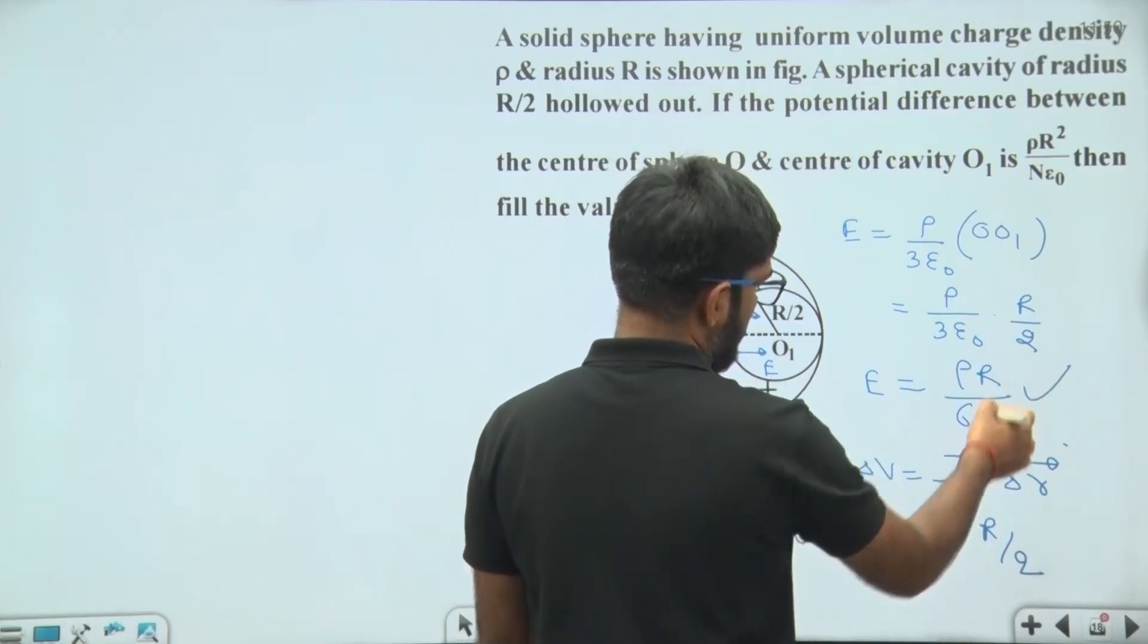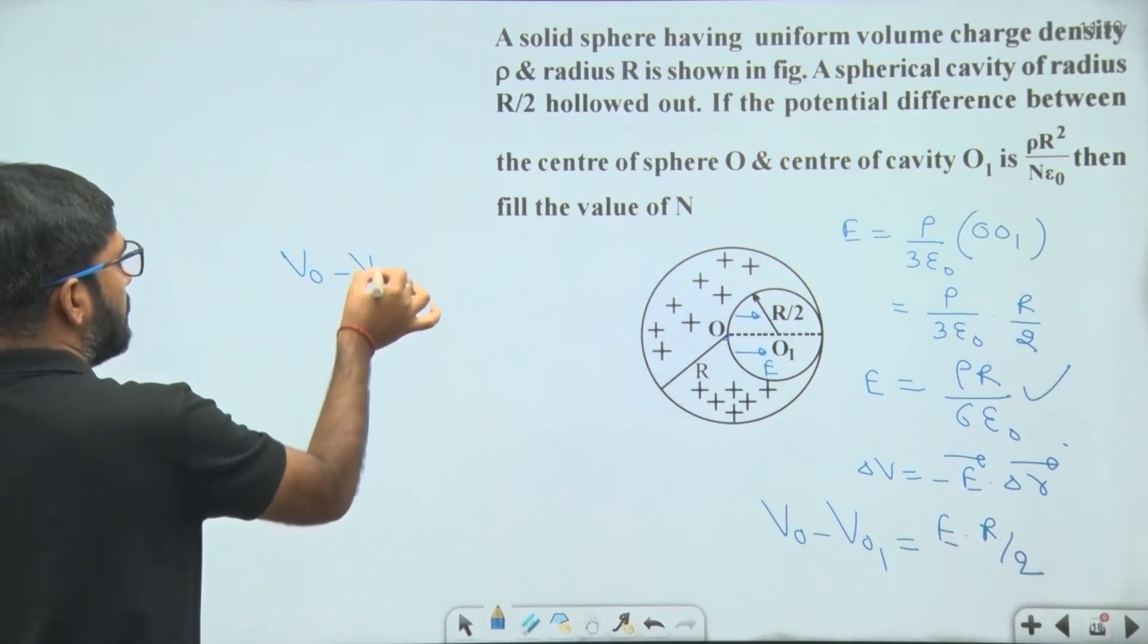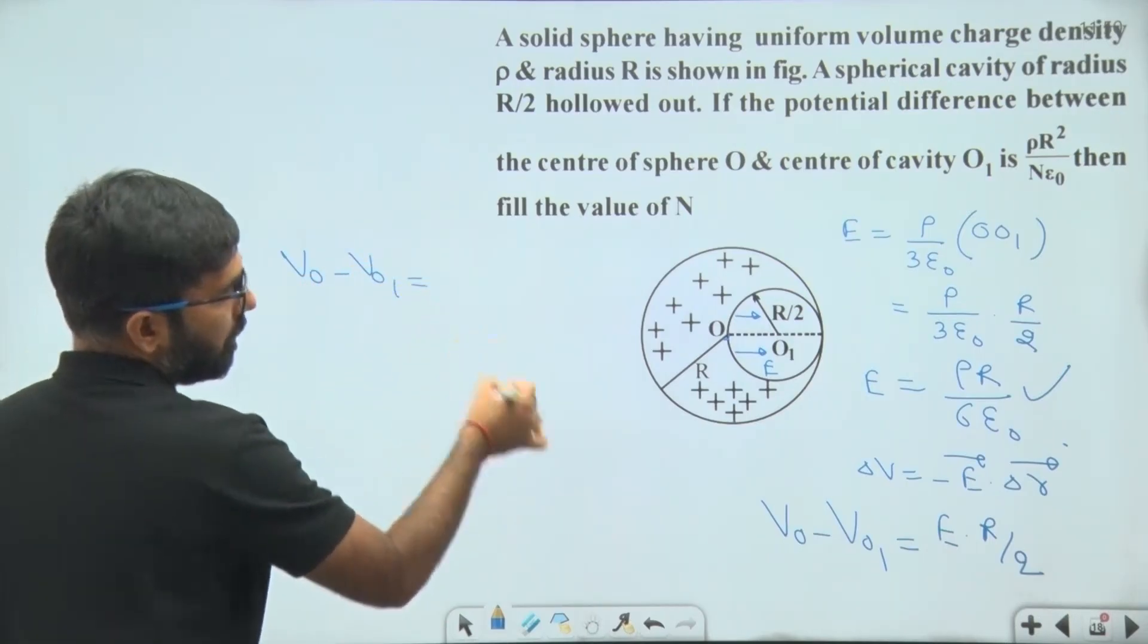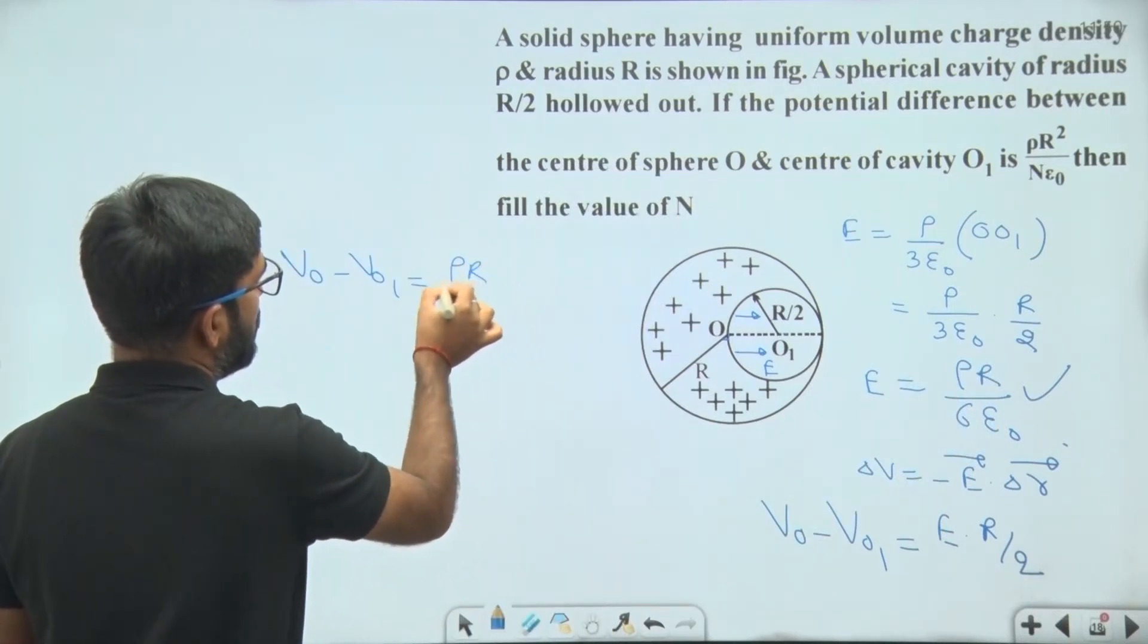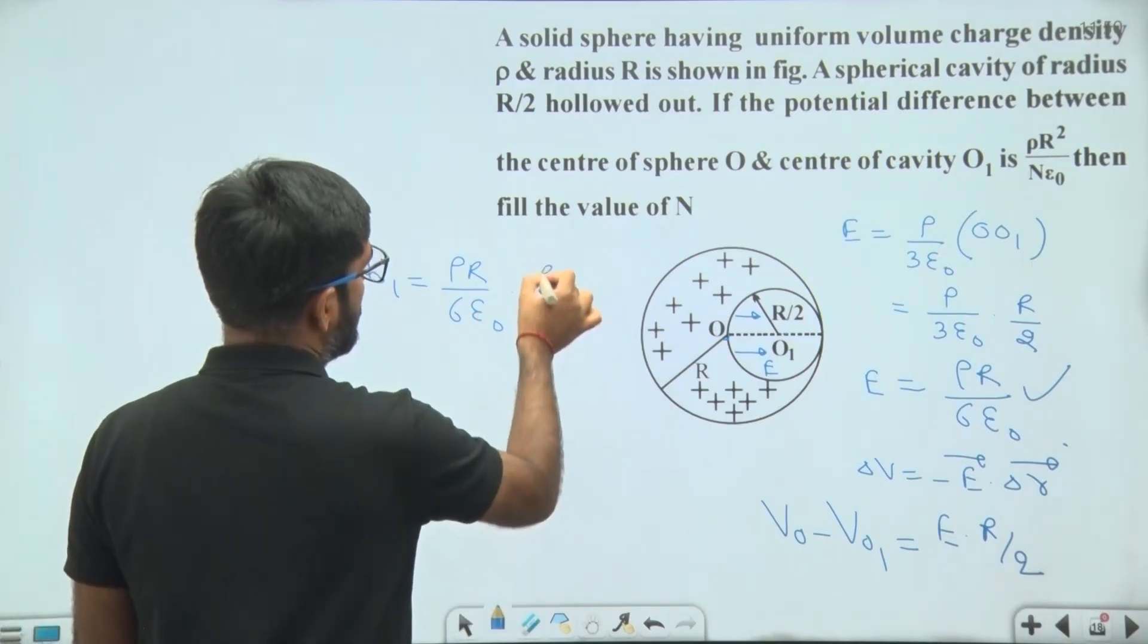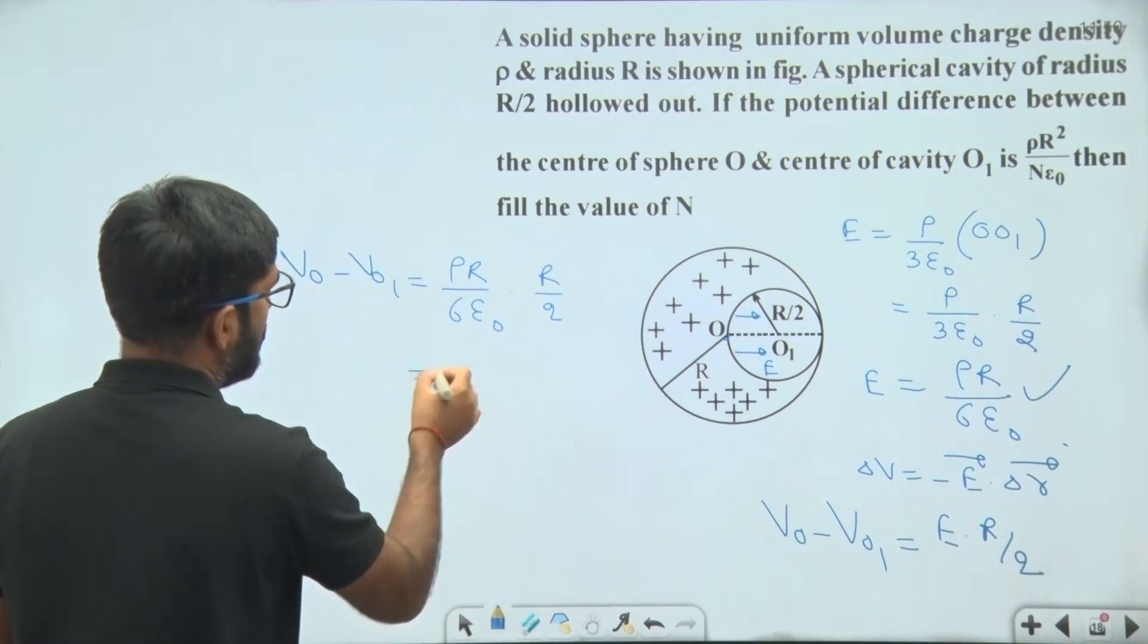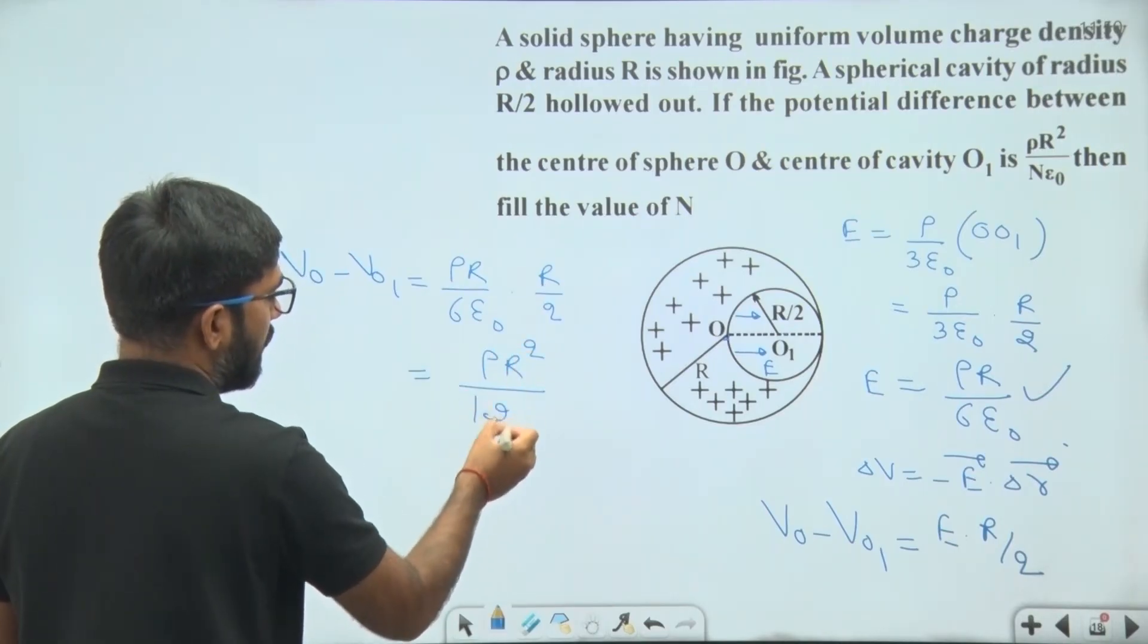Put the value of electric field from here. We get V O minus V O1 equal to electric field is rho into R upon 6 epsilon 0 into R by 2. This value will be equal to rho into R square upon 12 epsilon 0.